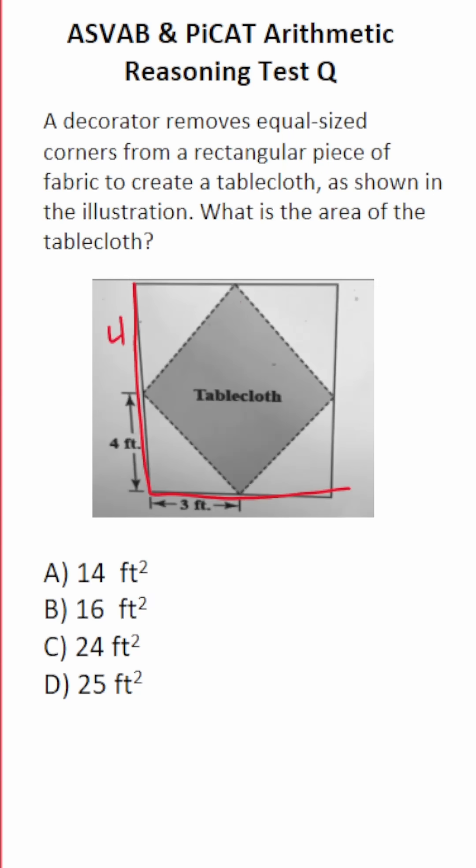Again, if this is 4, this is 4. If this is 3, this is 3. How do you find the area of a rectangle? It's length times width. So we're going to use these dimensions to find the area of this big rectangle.